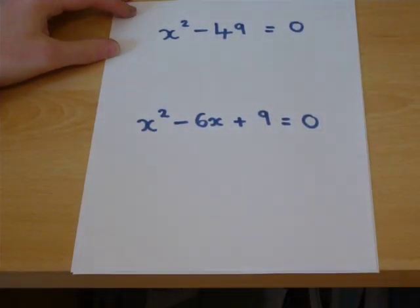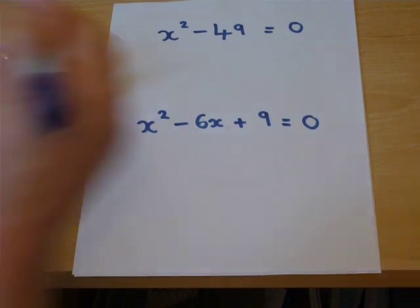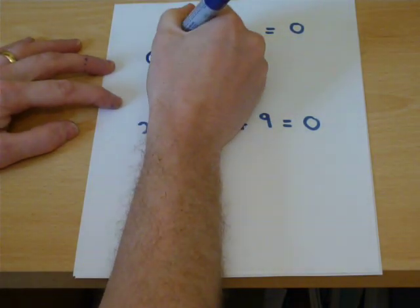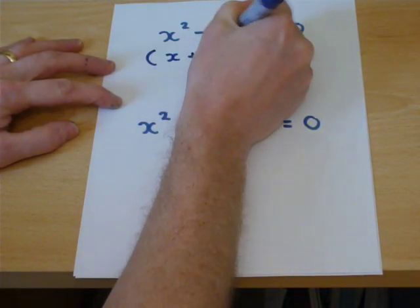Now, it's not always that easy to factorise. This one is a special case called the difference of two squares where there are no x terms. However, it's actually quite quick to factorise.